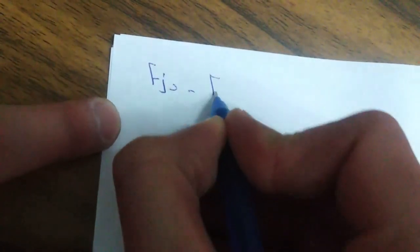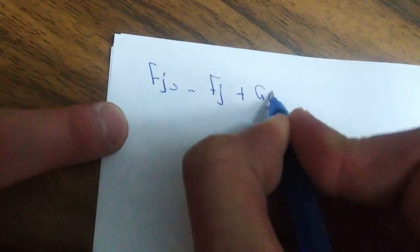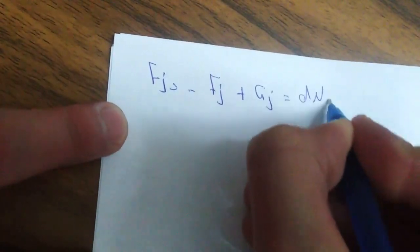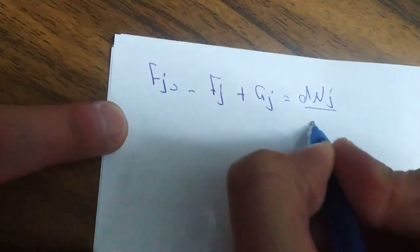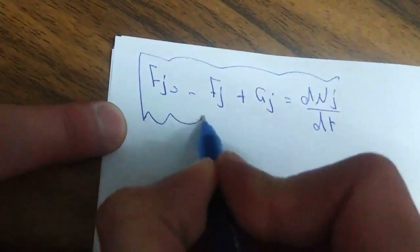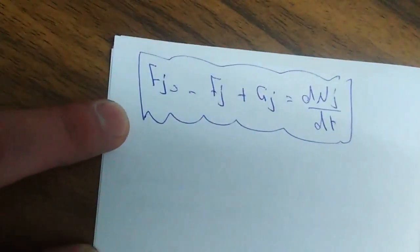فزي ما حكينا: F of J naught — اللي هي in — minus F of J — اللي هي out — plus generation term، تساوي accumulation، وهي dN of J على d of T. هاي هي General Moles Balance Equation.